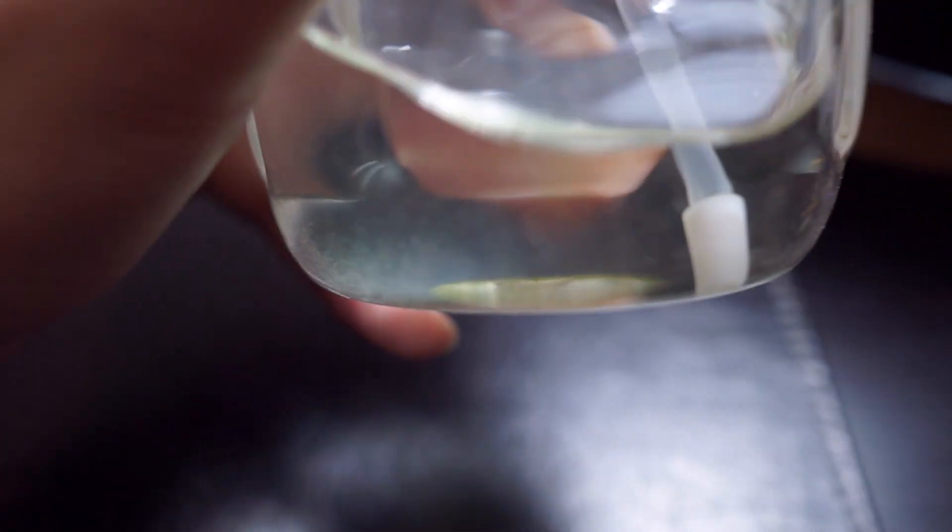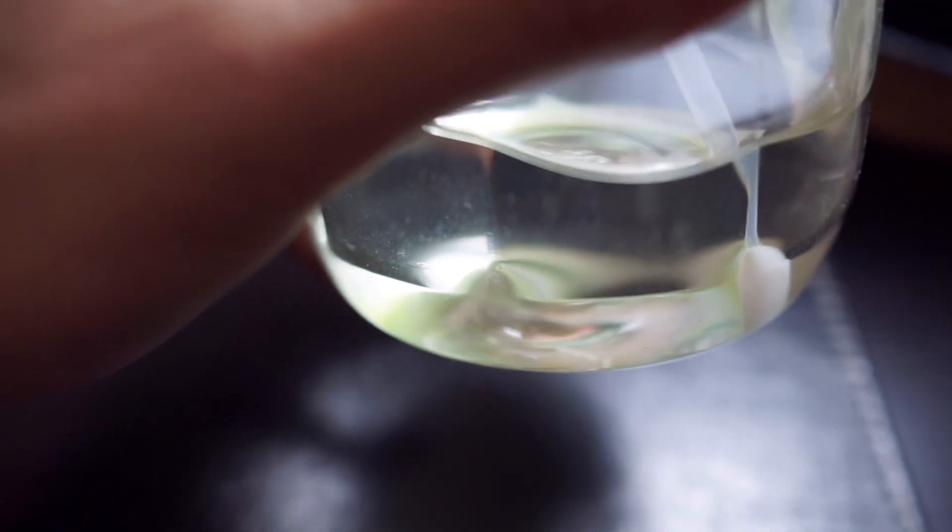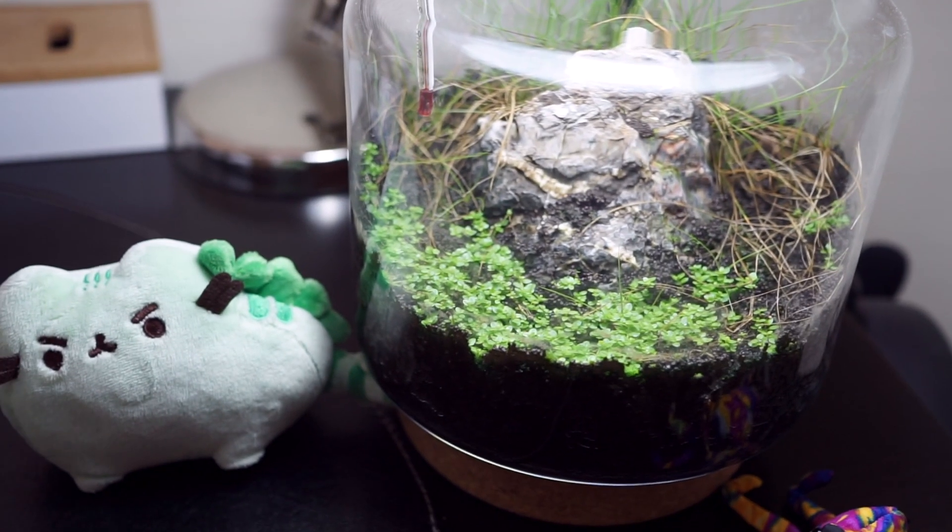There is moss—I don't know if you can see it, but moss spores growing at the bottom of this water bottle. And every single time I spray it, I'm spraying moss all over the jar as well.